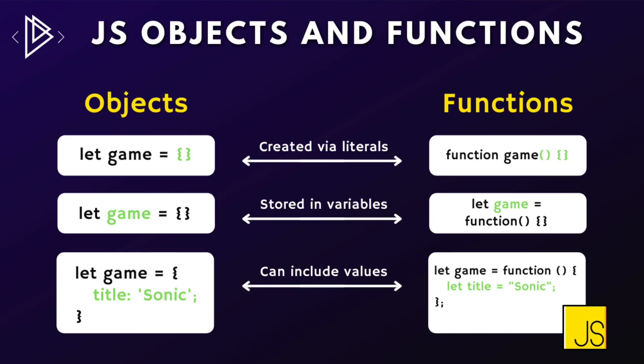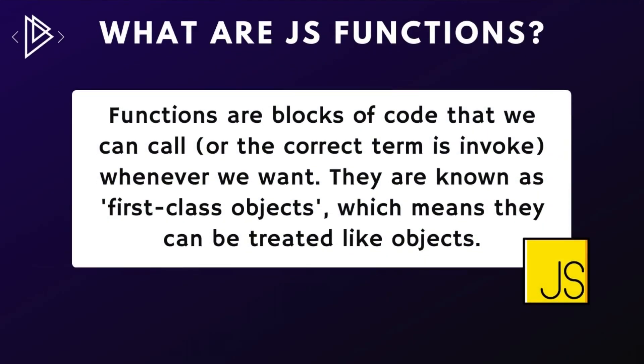The key difference between an object and a function is that with a function, we can call or invoke it. Right now that probably doesn't mean anything to you, so let's first understand what functions are, and then we can understand what we mean by calling or invoking them. Functions are blocks of code that we can call, or the correct term is invoke, whenever we want. They're a key part to JavaScript's power and expressiveness.